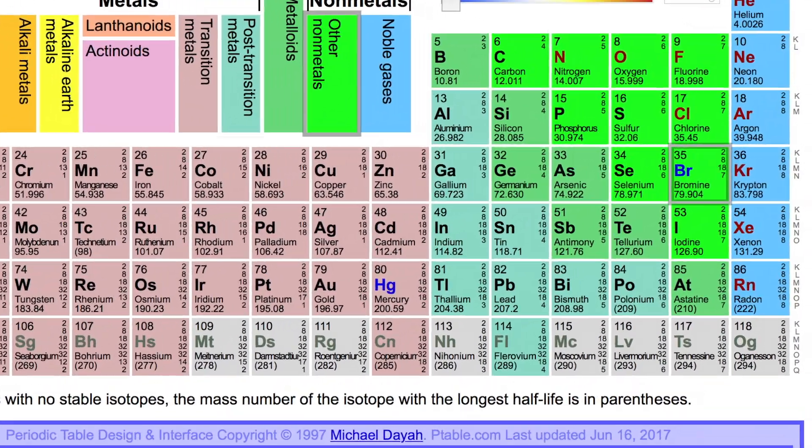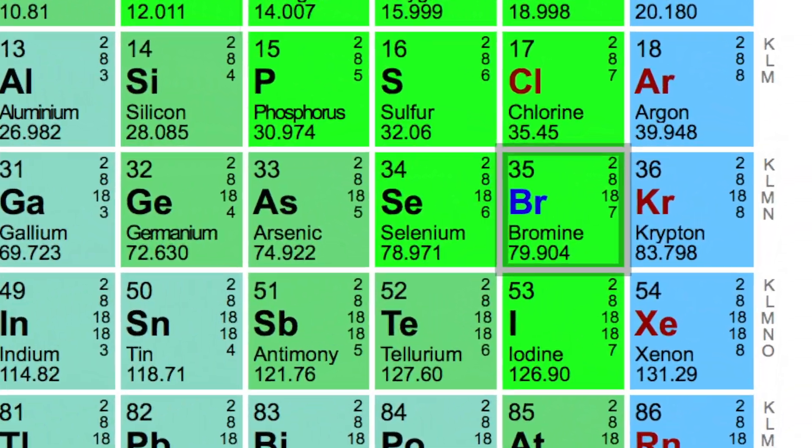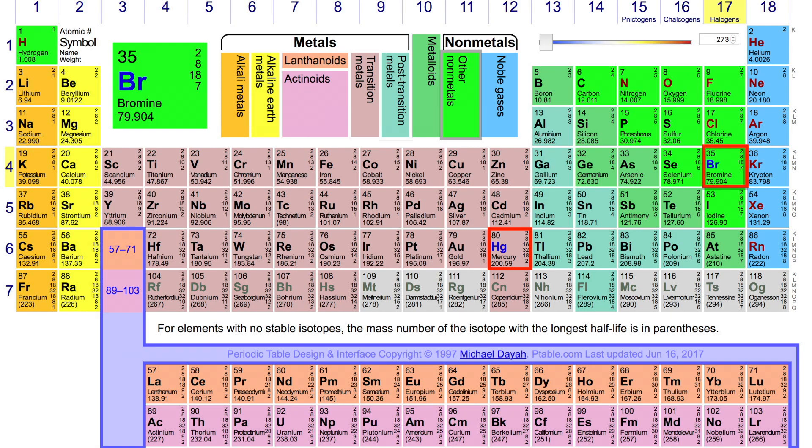Bromine is one of the halogen group with an atomic number of 35. What's interesting is that it is one of the only two elements that are liquid at room temperature, with the other one being mercury.